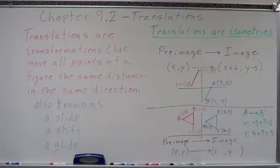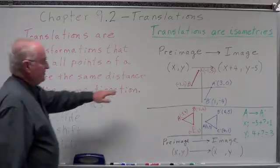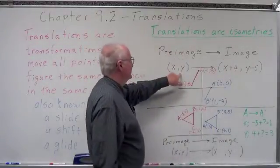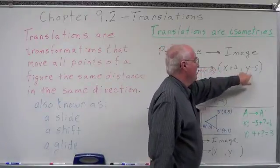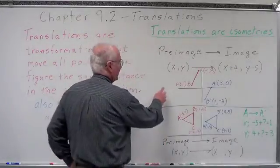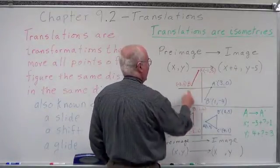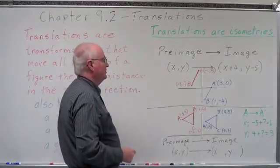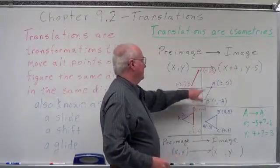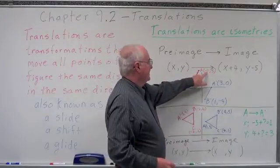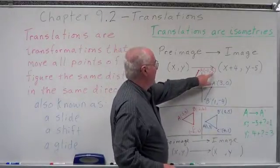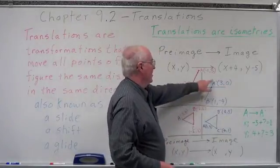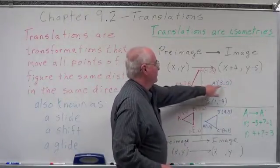Here's an example. We have a pre-image at point (x, y) and we want to apply a rule to get to the image at (x + 4, y − 5). The red is our pre-image. We have A at (−1, 5) and B at (−3, 1). We want to add 4 to the x: adding 4 to A's x gives us 3, and subtracting 5 from the y gives us 0. So A prime is (3, 0).